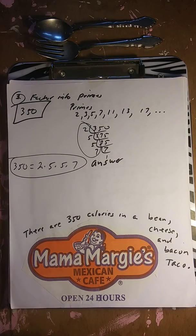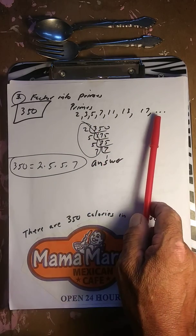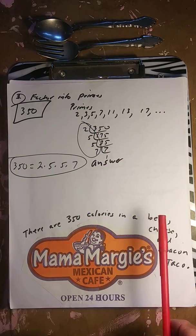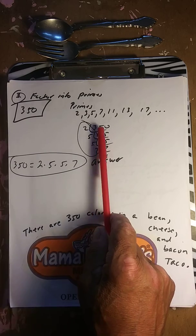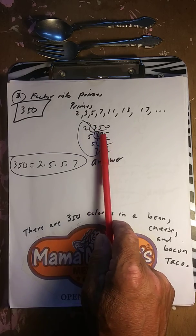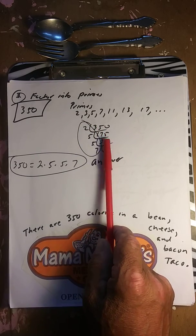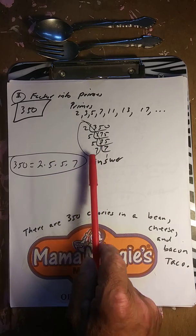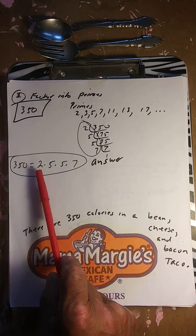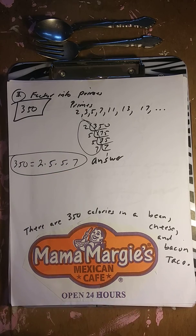Prime factorization of 350: divide 350 by 2 to get 175, divide 175 by 5 to get 35, divide 35 by 5 to get 7, divide 7 by 7 to get 1. So 350 is 2 times 5 times 5 times 7.